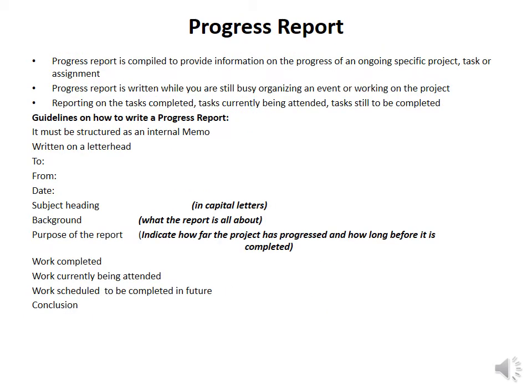Progress Report. A progress report is compiled to provide information on the progress of an ongoing specific project, task, or assignment. It might happen that in your organization you are busy dealing with a building project or a renovation project, so you will need to give a progress report of what is happening — how far the project is. The progress report is written while you are still busy organizing an event or working on the project. You will need to state what has been done, what has not yet been done, tasks currently being attended to, and tasks still to be completed.